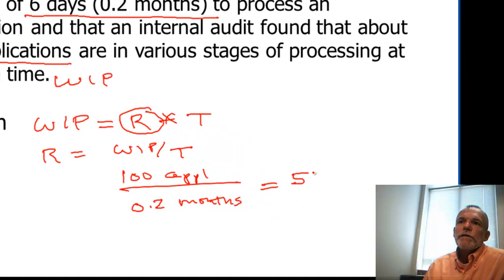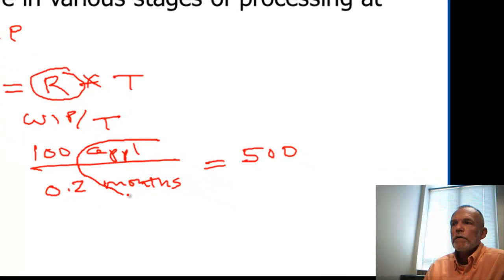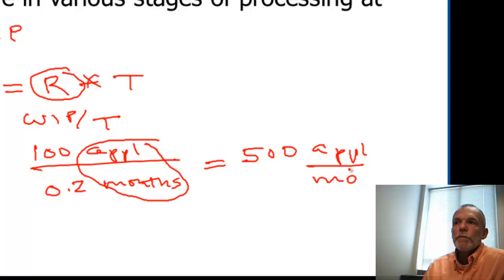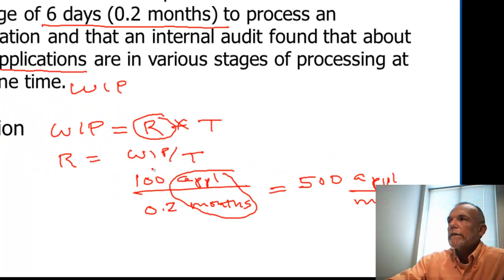This is a rate. The rate's always going to be some number of entities per some unit of time. We just capture that unit of measurement here: applications per month. And so the rate at which this loan department would be processing applications would be 500 applications per month. Now let's go to the next one.